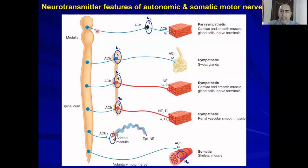Everything coming out directly from the CNS has acetylcholine as the neurotransmitter and nicotinic as the receptor. Everything in the ganglion is NN. There is also another nicotinic receptor on the adrenal medulla, and on the skeletal muscle it is NM — nicotinic muscle type.